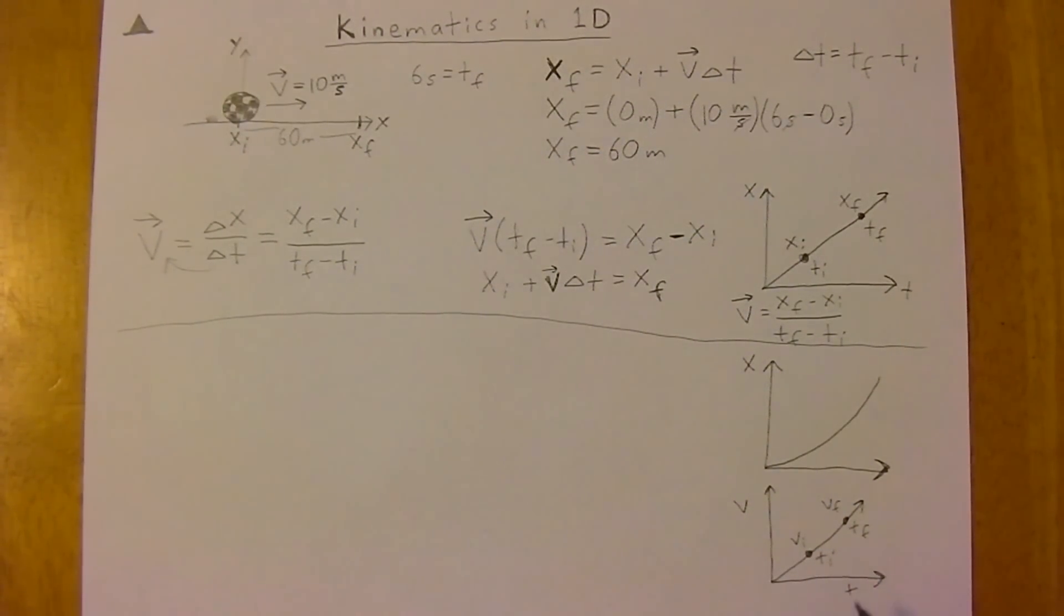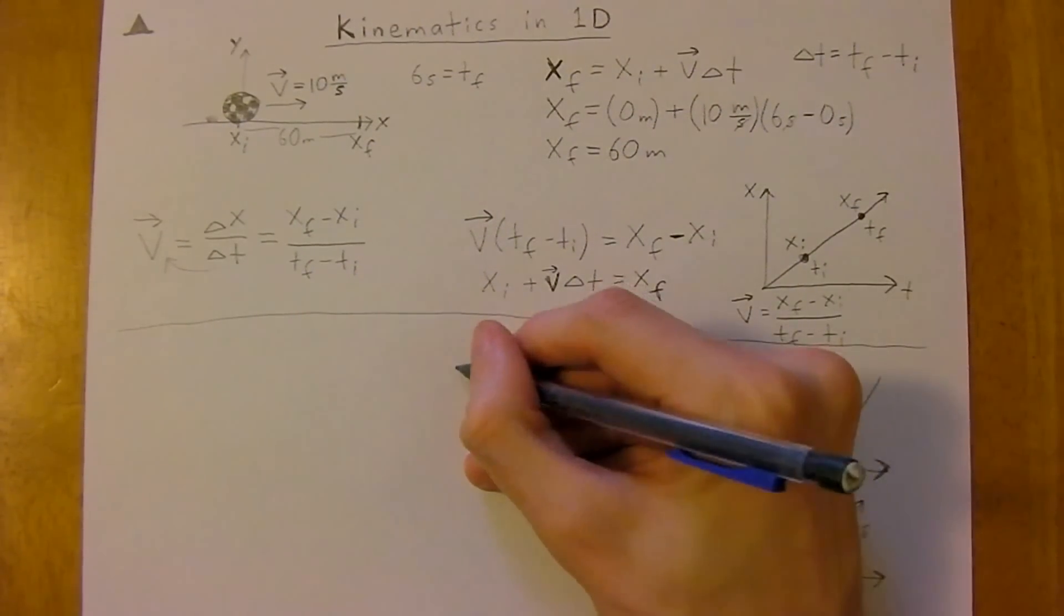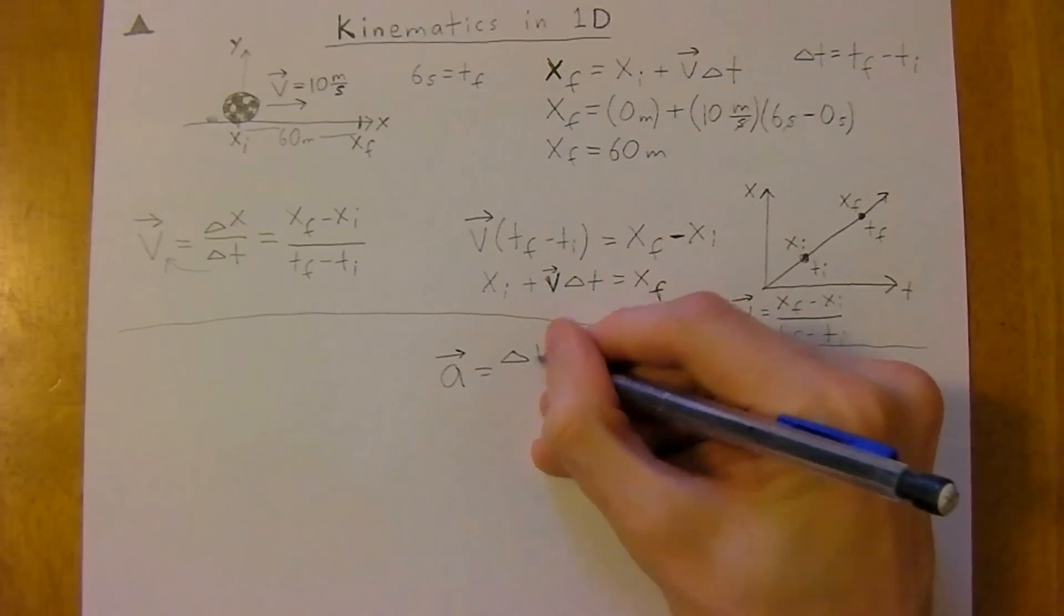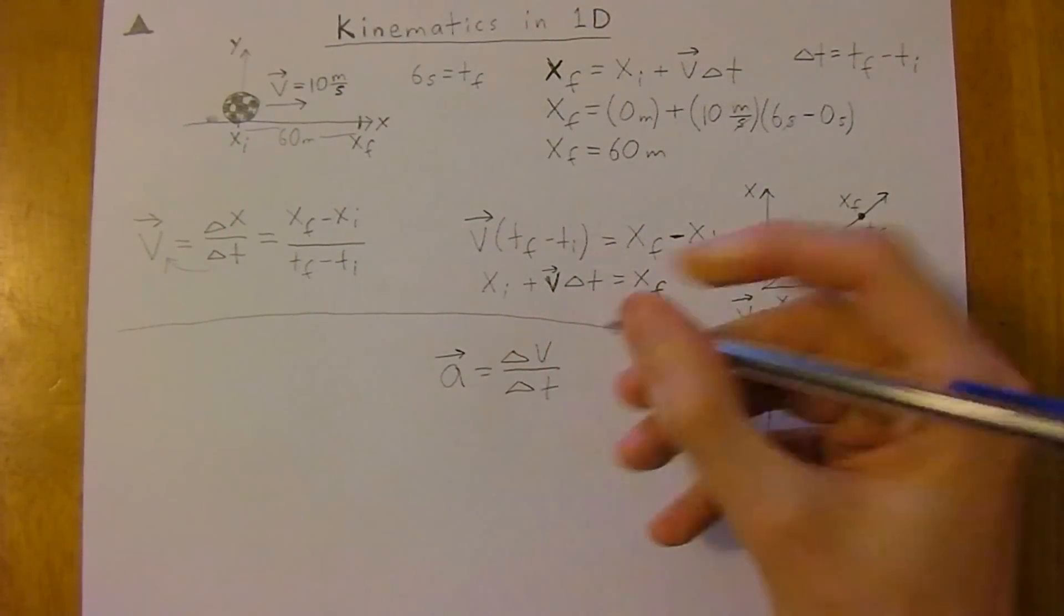Then this will give you your acceleration. So the slope of your displacement versus time graph gives you your velocity, and the slope of your velocity versus time graph will give you your acceleration. So change in velocity over change in time.